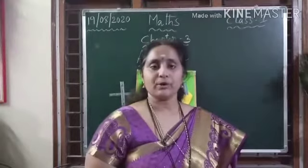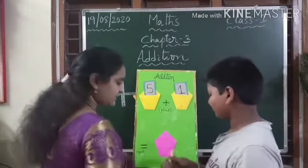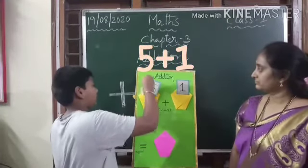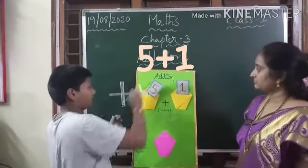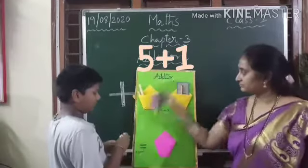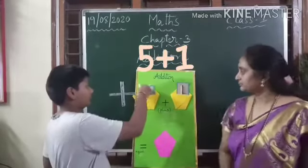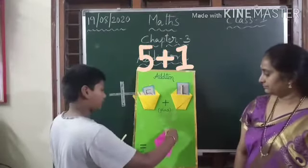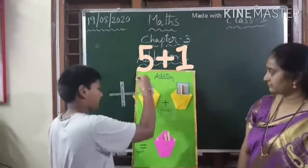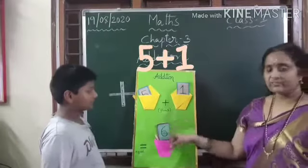Now let us do another problem using sticks. Aditya, come here and do the problem: five plus one. Using sticks, complete the problem. One, two, three, four, five — and this is one more. Five plus one equals six. Plus means addition, so we put the things together. One, two, three, four, five, six — it equals six. Five plus one equals six.